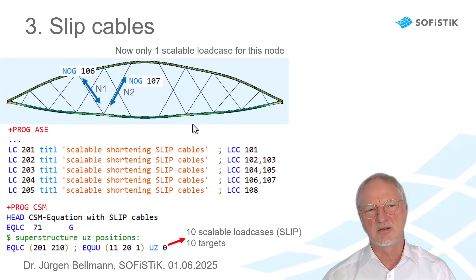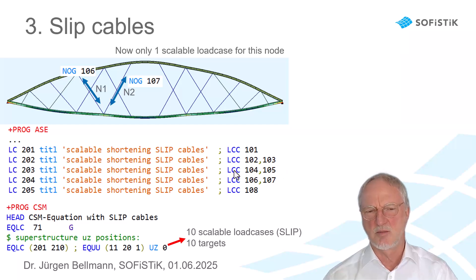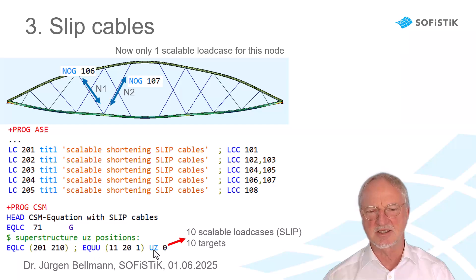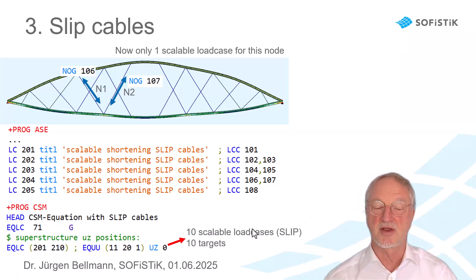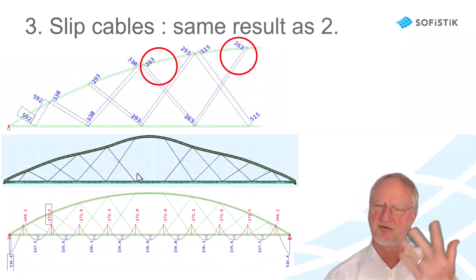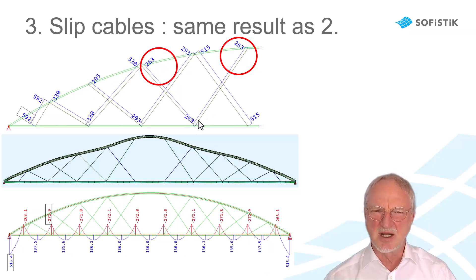We now run this in AASE. In the scalable load case WAR203 we now stress two cables, but that is not a problem. In the CSM optimization we have only 10 scalable load cases and 10 targets with uz equals zero — perfect for the optimization. The result is the same as before: a perfect bridge, and the normal forces are equal because this cable can slip over this point.